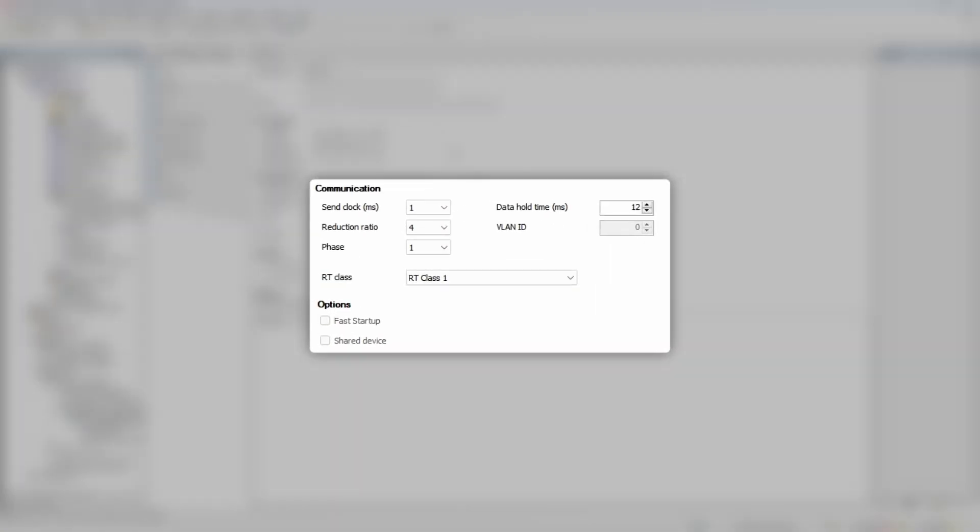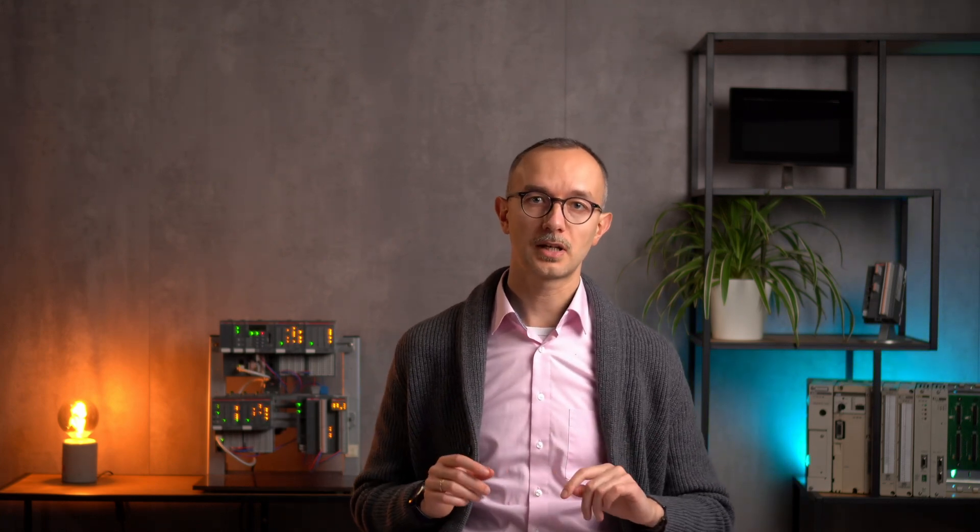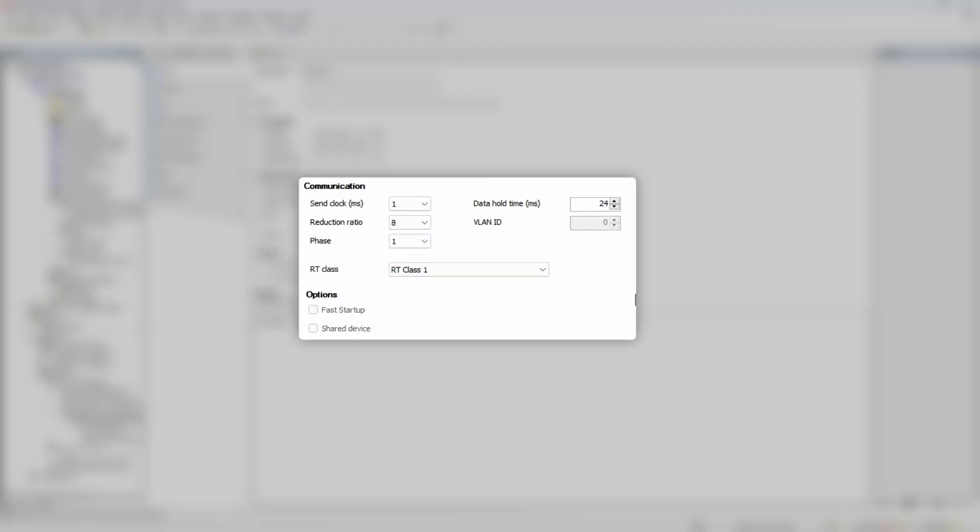Parameters under communication section define how often PROFINET controller reads inputs from and writes outputs to the I.O. device. With send clock parameter set to 1 ms and reduction ratio set to 4, we'll get 4 ms cycle time. If you remember, PLC's main cycle time is 10 ms, which means that local I.O. channels are updated every 10 ms, so we can easily increase reduction ratio to 8 to save some network traffic.